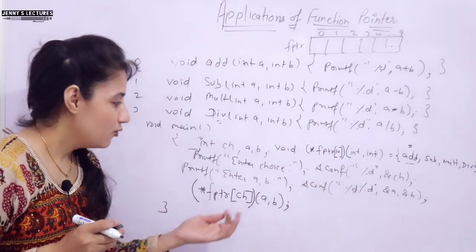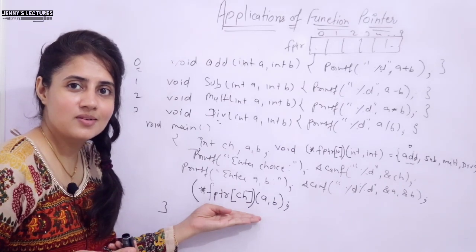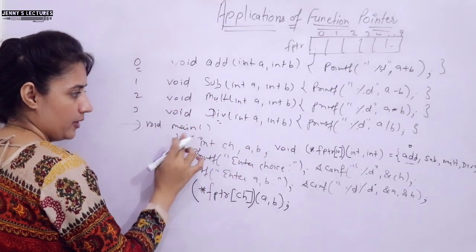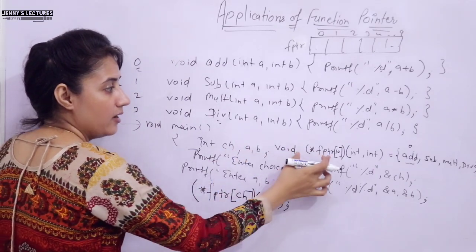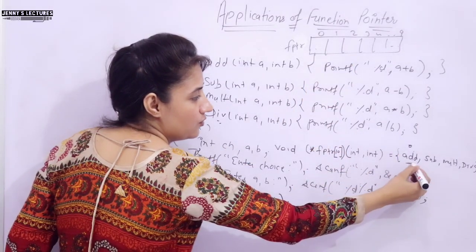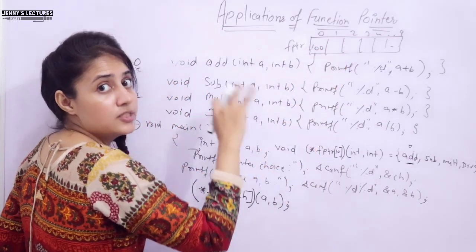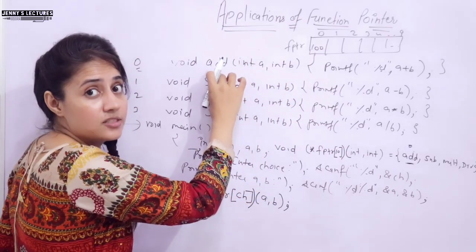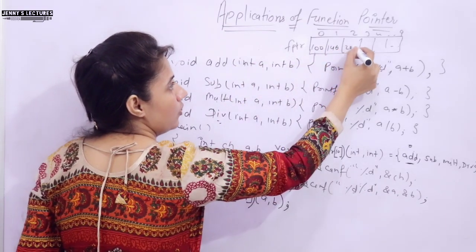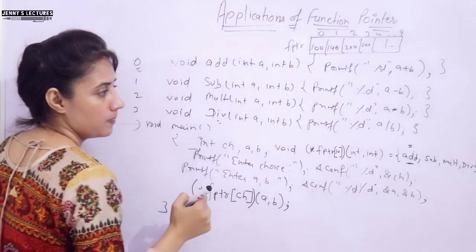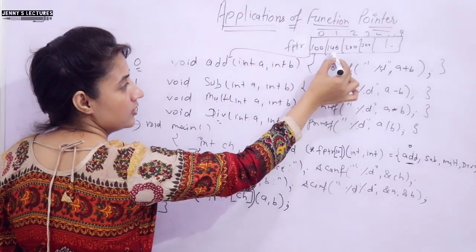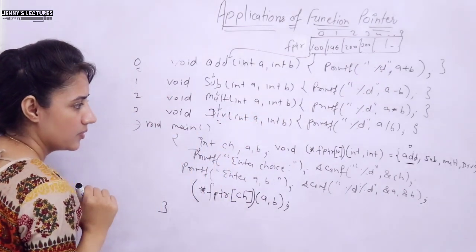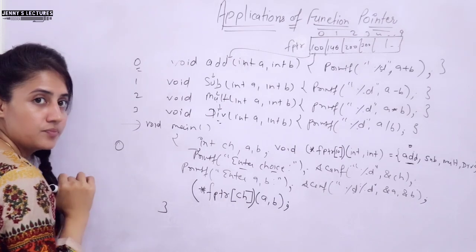So when you use a function pointer, you have to write less code. When the program runs, we have the variable ch and the function pointer array. Suppose address of add is 100, subtract is 146, multiply is 200, and divide is 300. So index 0 points to add, index 1 to subtract, index 2 to multiply, and index 3 to divide.